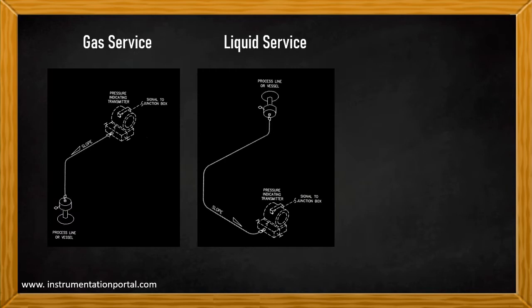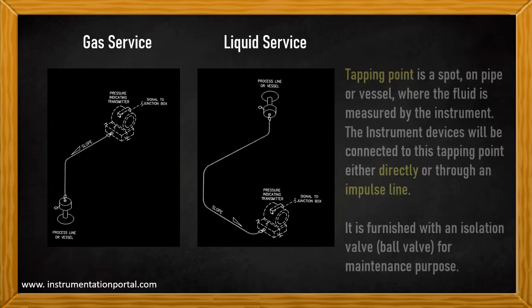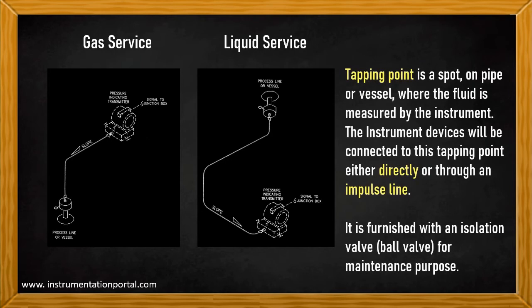This is the diagram of the instrument hookup. The left drawing is for gas service and the right drawing is for liquid service. As can be seen, the instrument position in gas service is higher than the tapping point, while in liquid service the instrument position is lower than the tapping point. The tapping point is a spot on a pipe or vessel where the fluid is measured by the instrument. The instrument device connects to this tapping point either directly or through an impulse process line, and the tapping point is furnished with an isolation valve — usually a ball valve — for maintenance purposes.